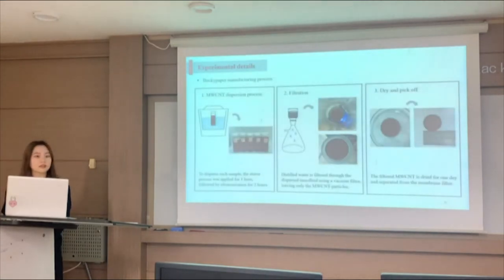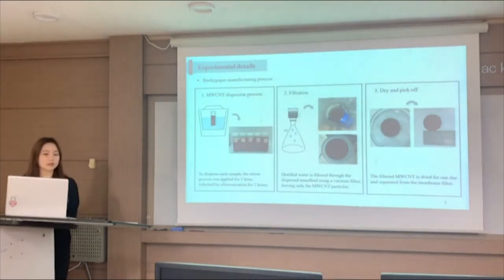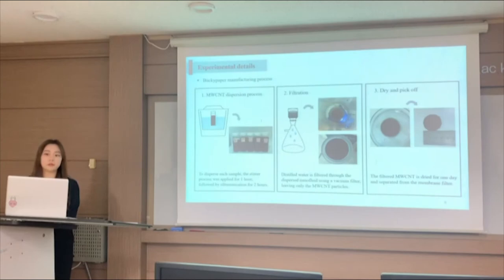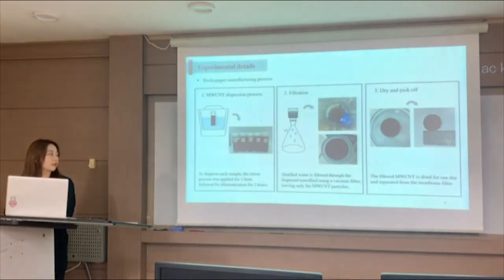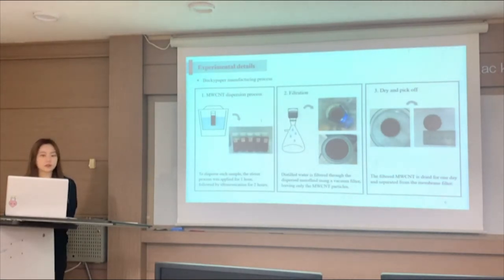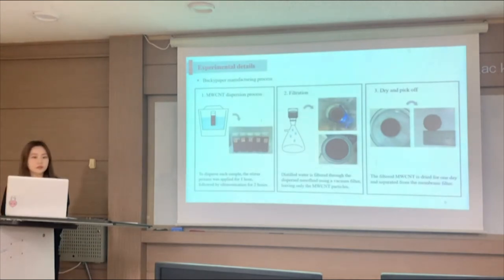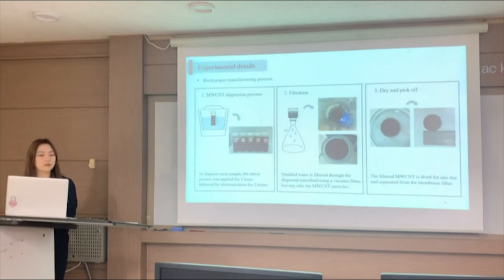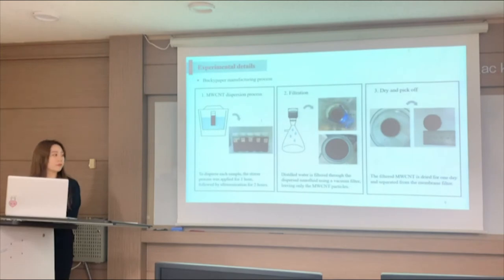This slide shows the buckypaper manufacturing process. First, dispersion of multi-walled CNT: to disperse each sample, a stirrer process was applied for 1 hour, followed by ultrasonication for 2 hours. Second, filtration: distilled water is filtered through the dispersed nanofluid using a vacuum filter, leaving only the multi-walled CNT particles. Lastly, the filtered CNT is dried for 1 day and separated from the membrane filter, completing the buckypaper.